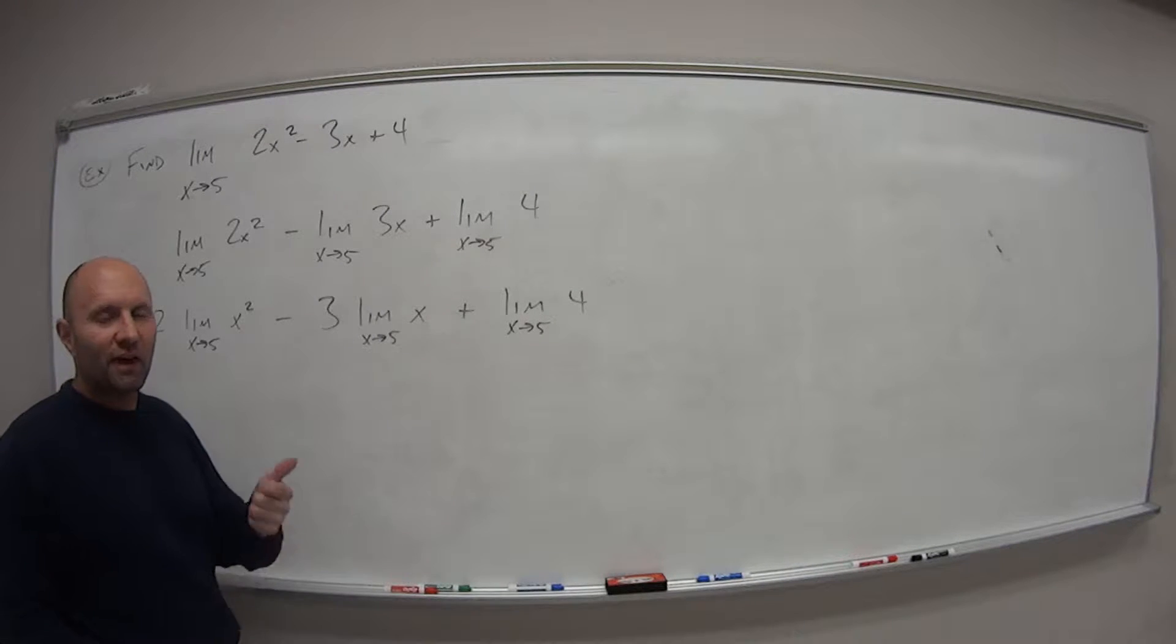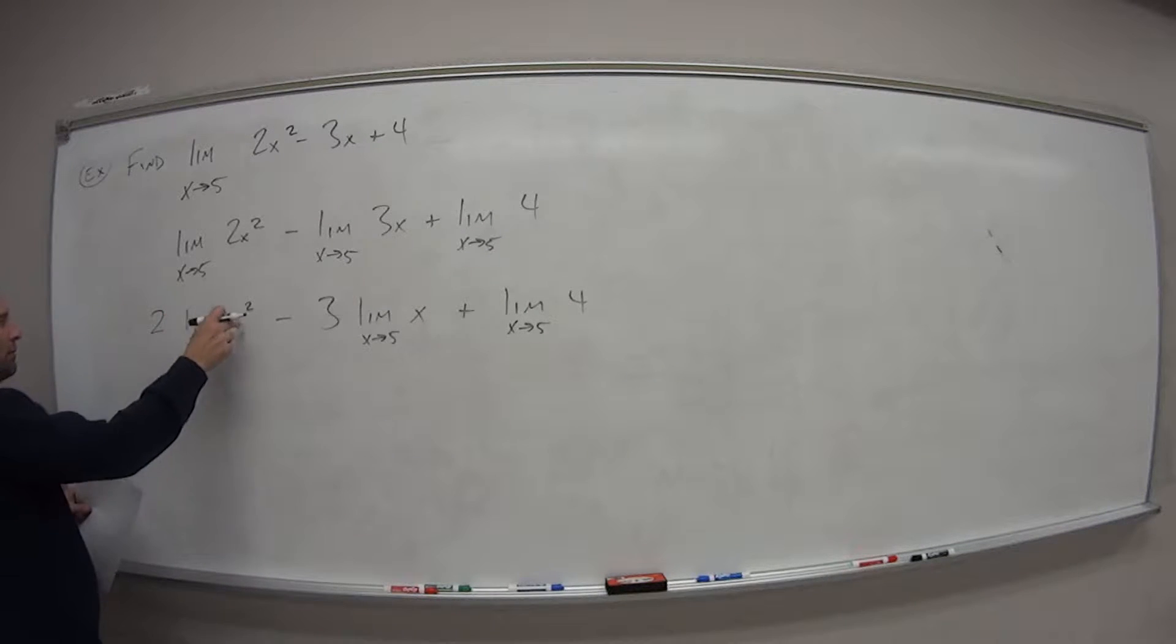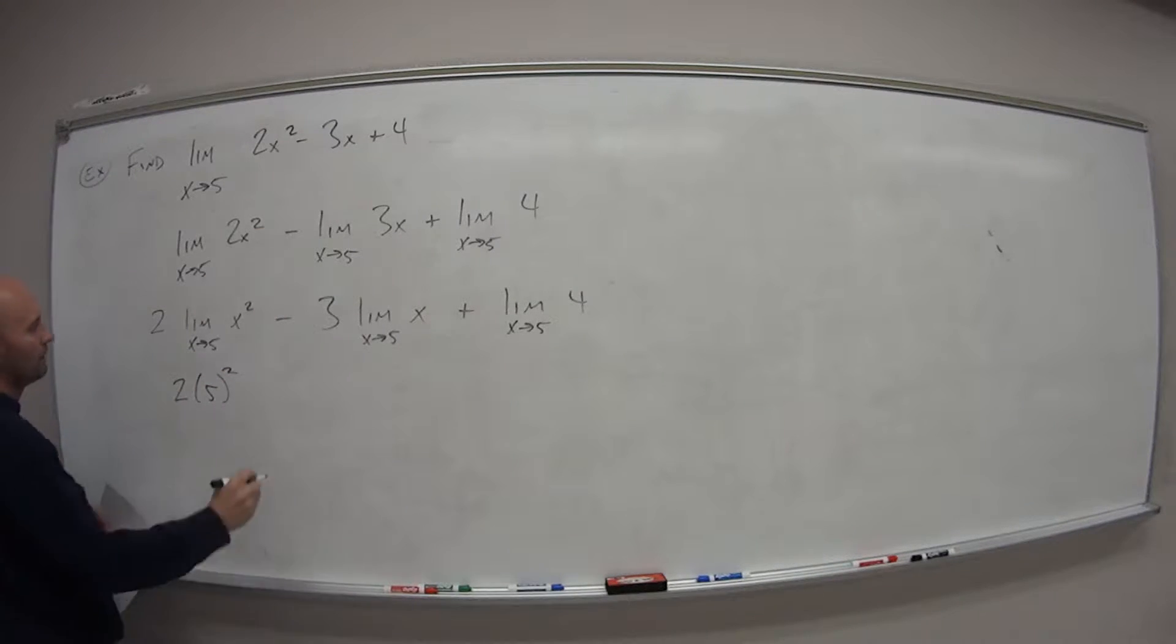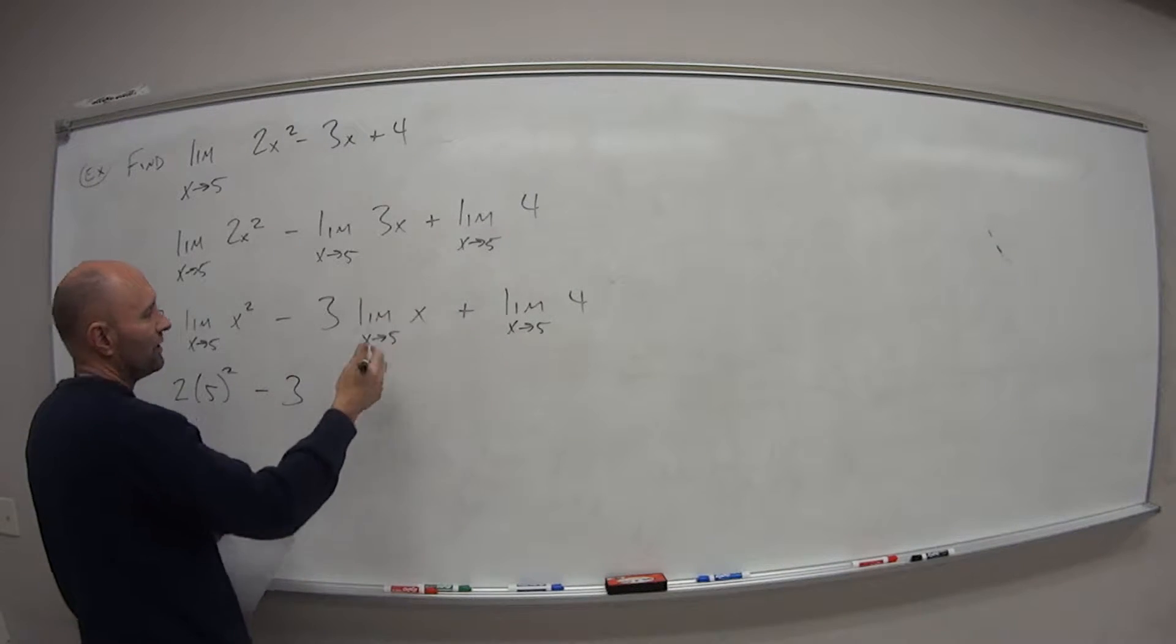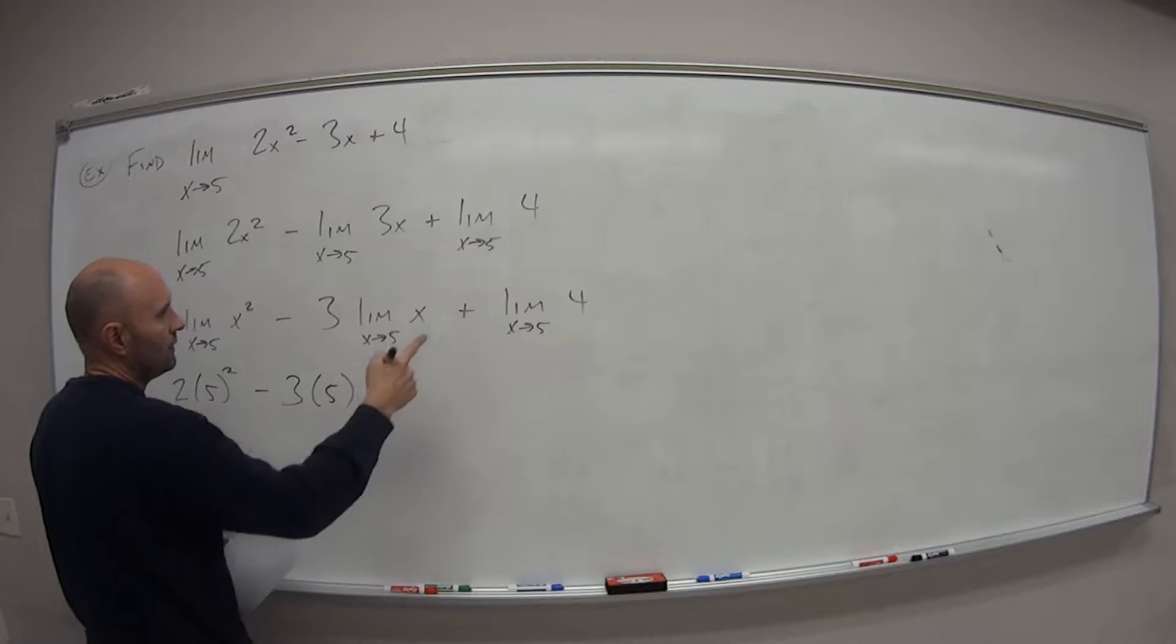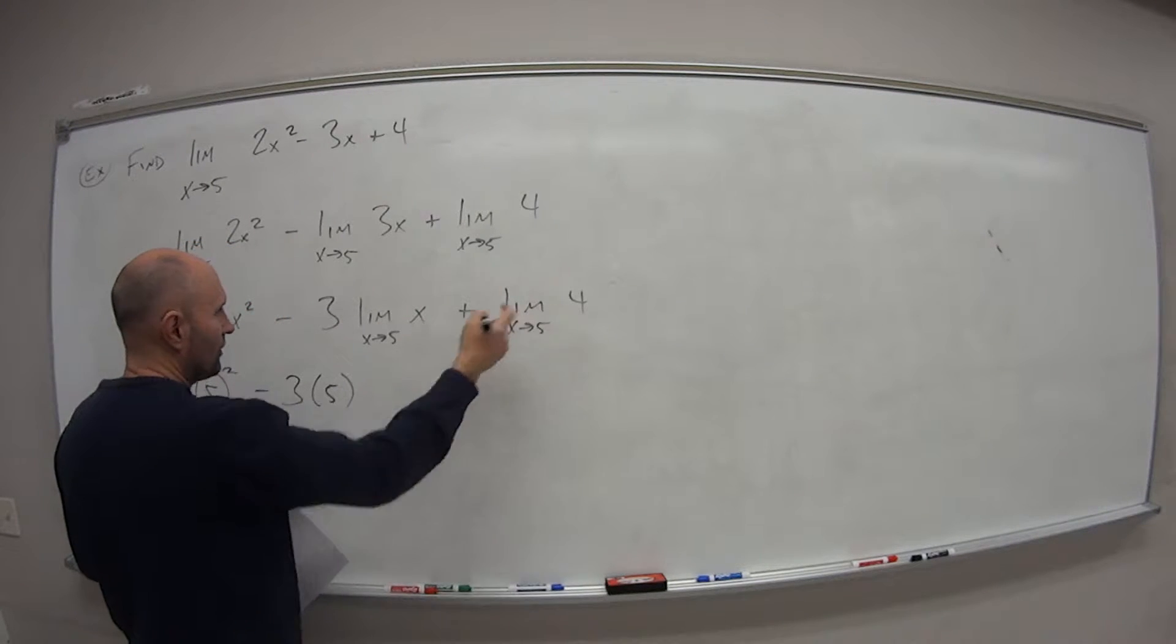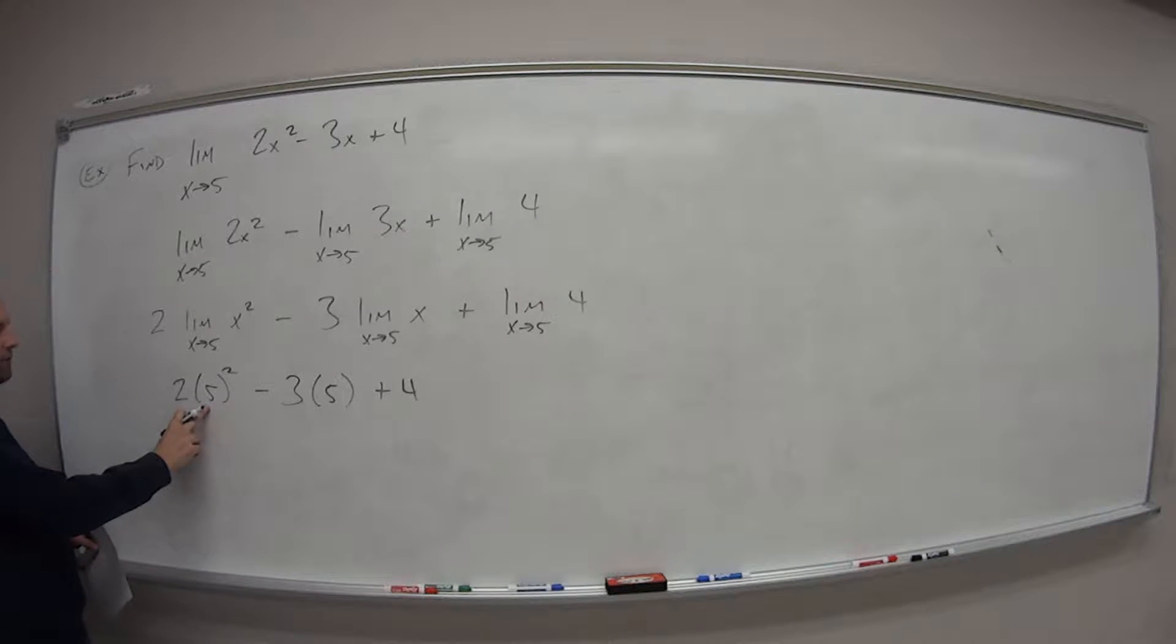So now by laws 7, 8, and 9, when we have the limit of some function, that's just what? This is going to be 2 times if we plug this value in. So x squared is the same as a squared, so 5 squared minus 3 times, well, the limit of x as x approaches a is just equal to that value a itself, so five. And then here, limit of some constant, no matter what x approaches, is just equal to that constant.